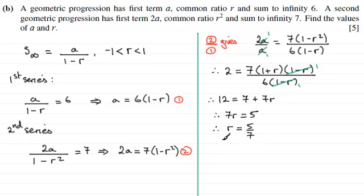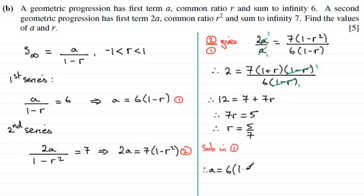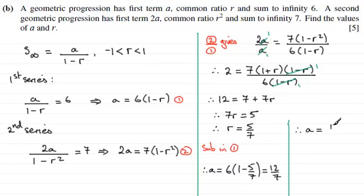Now that I've got r, I can substitute this value into equation 1, because it gives us a directly. Substituting r equals 5 sevenths into equation 1, we get a equals 6 times 1 minus 5 sevenths. 1 minus 5 sevenths is 2 sevenths, times 6 gives 12 sevenths. So in summary, a equals 12 sevenths and r equals 5 sevenths.